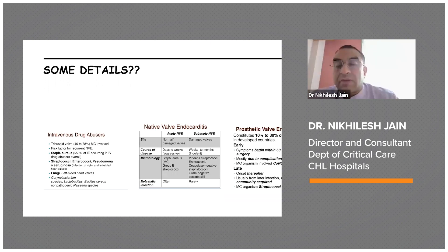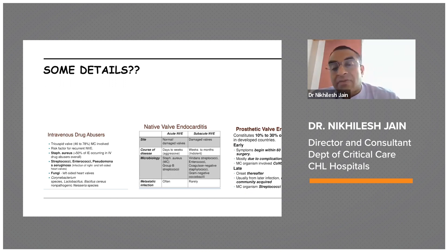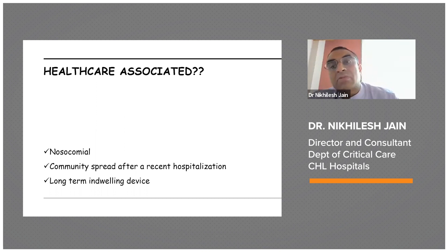Prosthetic valve endocarditis constitutes about 10 to 30 percent of all cases of infective endocarditis in developed countries. Early prosthetic valve endocarditis presents within 60 days of valve surgery and is mostly a surgical complication — the most common organism is coagulase-negative Staph. Late onset occurs thereafter from community-acquired infection, with streptococcal infection being most common. Healthcare-associated endocarditis can be nosocomial or community-spread following recent hospitalization, or related to long-term indwelling devices such as dialysis cannulas or central lines.